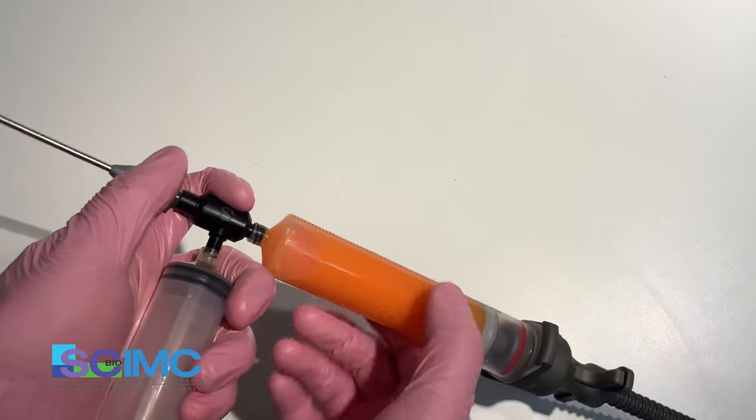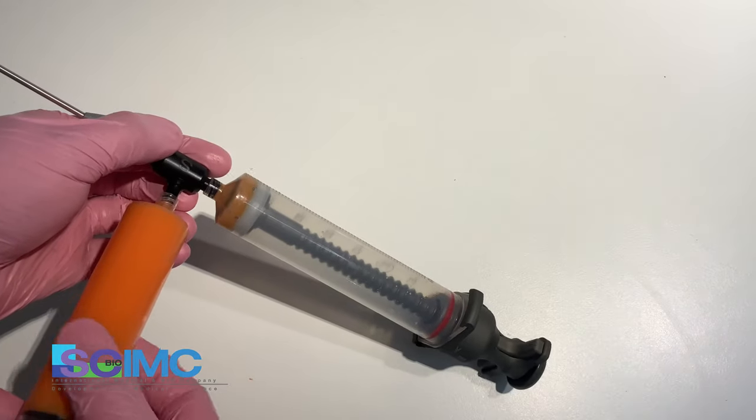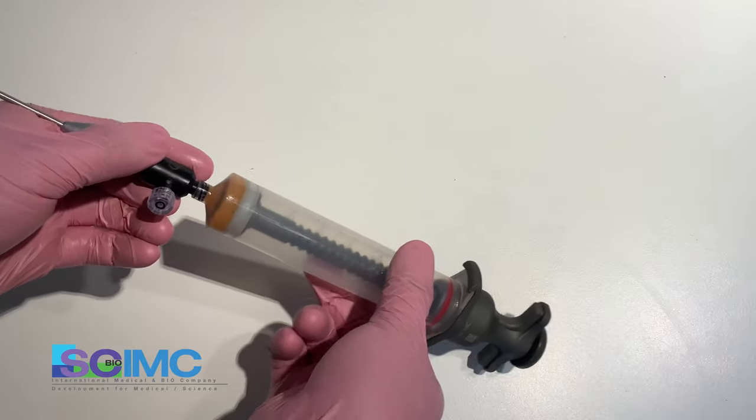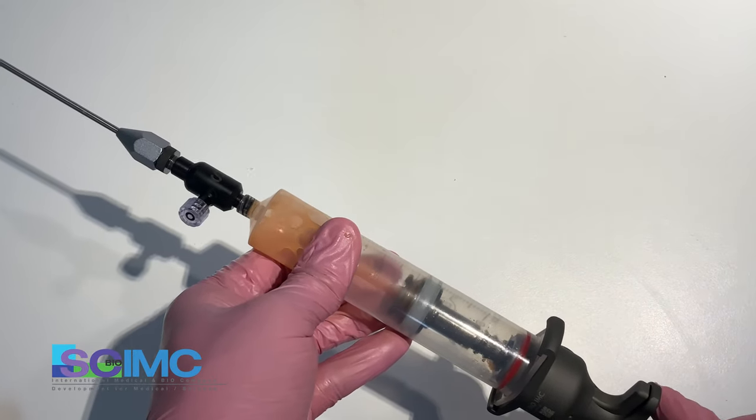Connect the empty syringe and transfer. Remove the syringe and close the cap for protection from contamination. And you can start harvesting again.